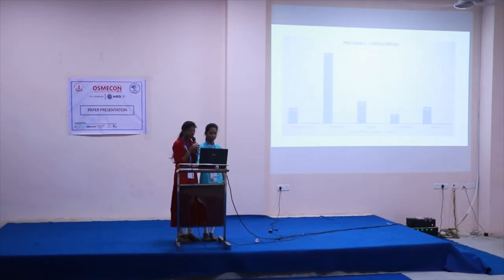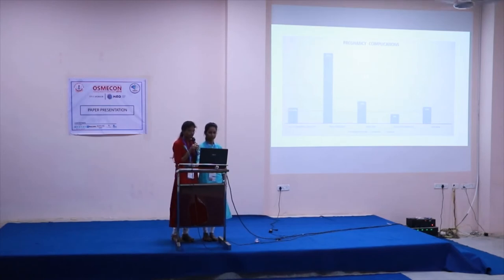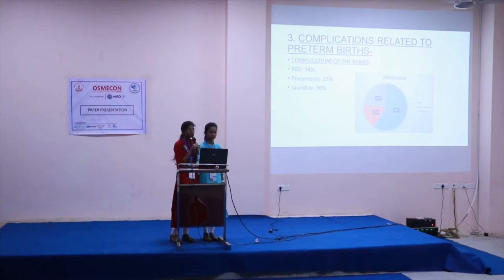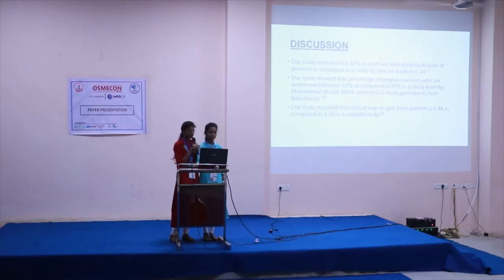Coming to pregnancy complications, 12.5% had both anemia and PAH, 56% presented with only anemia, 13% with only PAH, 13% with oligohydramnios, and 14% with malpresentation. The study also revealed that 74% of the babies presented with respiratory distress syndrome, 22% with pneumonia, and 30% with thrombocytopenia.